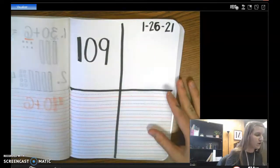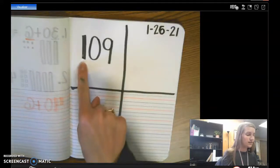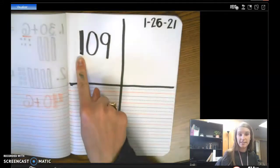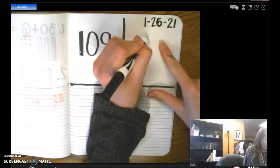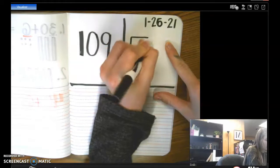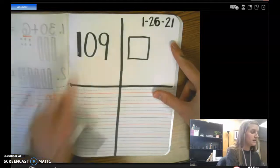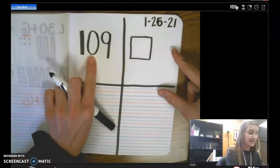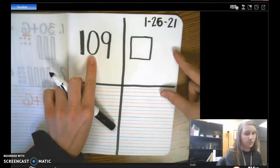Well, let's draw a picture of the number 109. We have a 1 in our 100's place, so we need to draw a square. Go ahead and draw a square to represent our 100. In our 10's place, do we need to draw any 10's? No, there's 0.